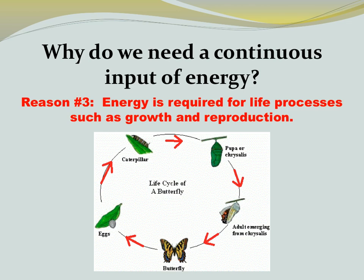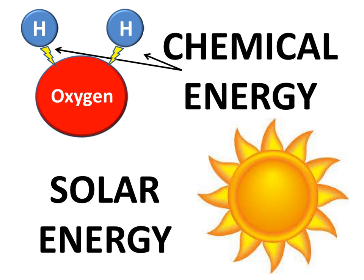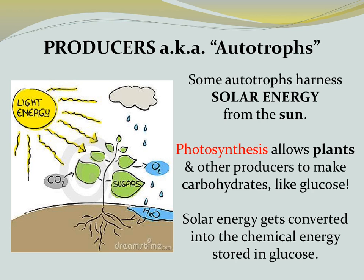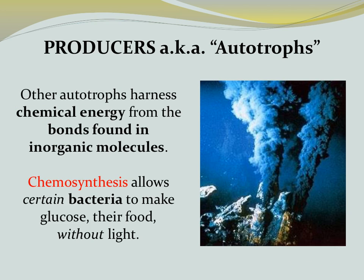So what kind of energy are we talking about? The vast majority of life depends on only two types: chemical energy and solar energy. Chemical energy is found in the bonds between the atoms of inorganic molecules. Solar energy comes from the sun. Organisms that make food within their cells are known as producers or autotrophs. Some autotrophs harness solar energy through photosynthesis to make carbohydrates like glucose. Other autotrophs harness chemical energy from inorganic molecules through chemosynthesis, allowing certain bacteria to make glucose without light.